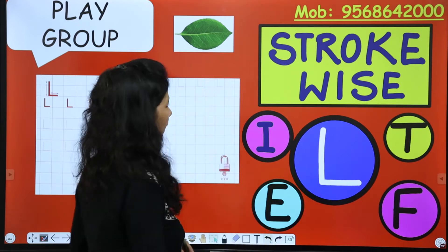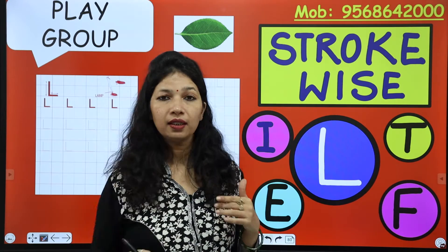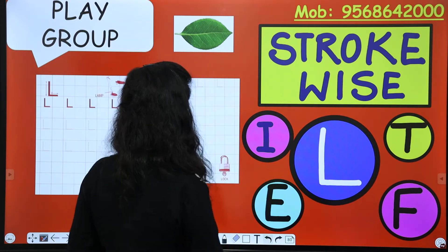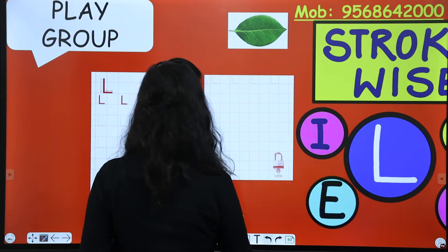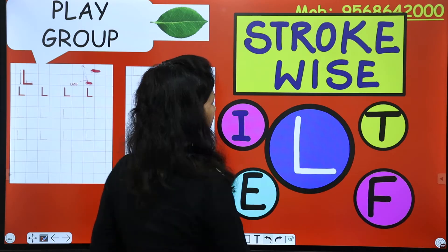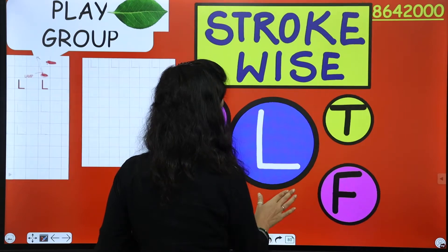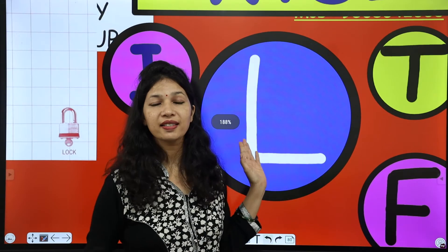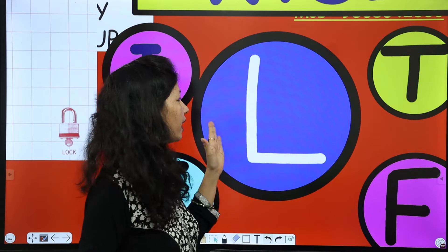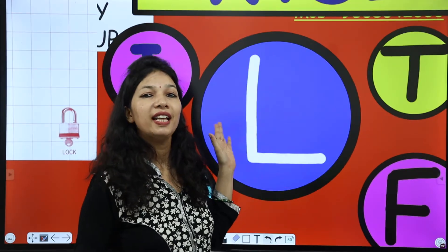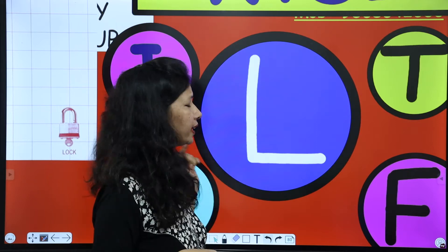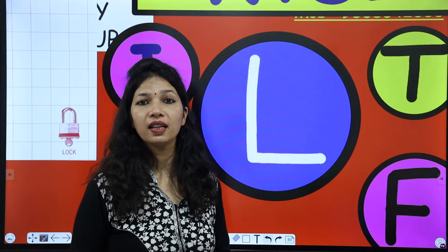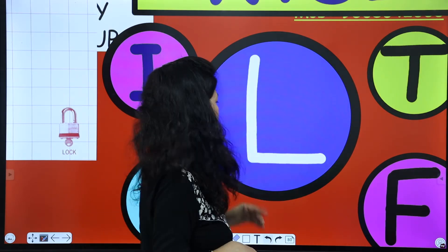So first of all ma'am aapko batayengi letter L ki formation kya hai? Kaisi usko dikhaya jata hai? Uske baad notebook mein aapko batayengi. See, this is letter L. Which letter is this? This is letter L. Baar baar aapko isko bolna hai taki aapko learn ho jaye. Isko dekhte huye aapko speak karna hai — Letter L. Say loudly: Letter L.